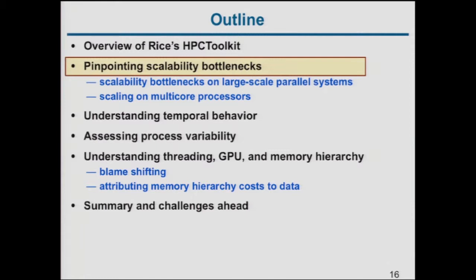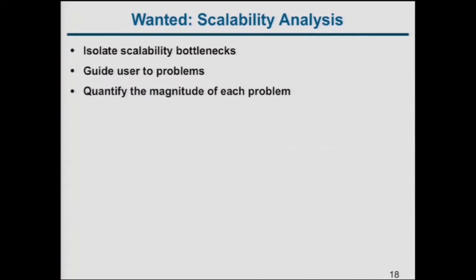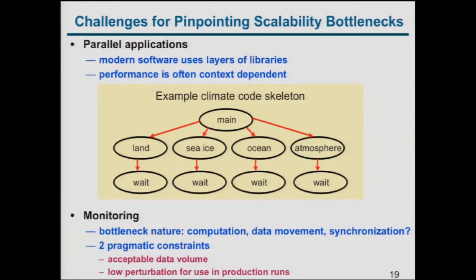Let me talk about pinpointing scalability bottlenecks. As you scale to larger numbers of processors, you want parallel efficiency to be one — doubling processors should double performance, halving execution time on a fixed problem. What you'll often find is that scaling tapers off. You want to know the gap, where it is in your program, and how to fix it. You want to isolate scalability bottlenecks, find where they are in your code, and quantify the magnitude of each problem.